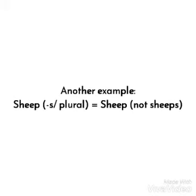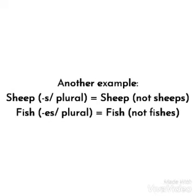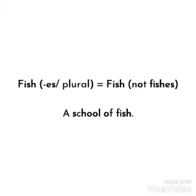Another example is 'sheep.' The word 'sheep' in plural form will not be 'sheeps,' but we can add a numerical form like 'one sheep,' 'three sheep,' and so on. And for another word like 'fish,' the plural form of fish will not be 'fishes,' but we can also add a numerical form, or we can say 'a school of fish.'